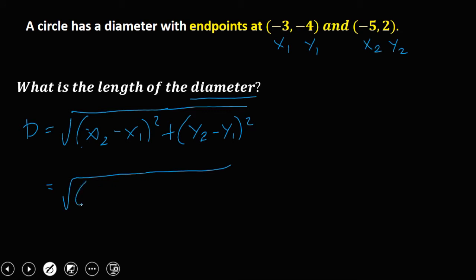So x₂, that's -5, minus x₁, that's -3, squared, plus y₂, that's 2, minus y₁, that's -4, then squared.